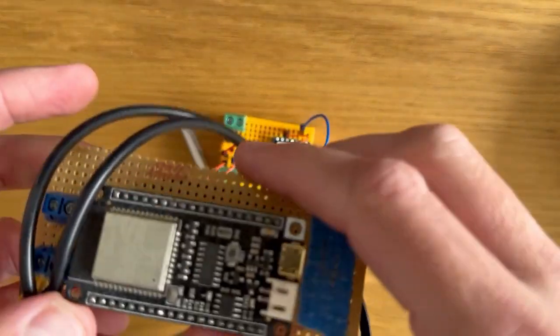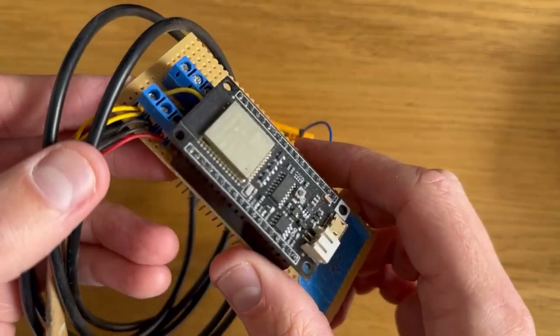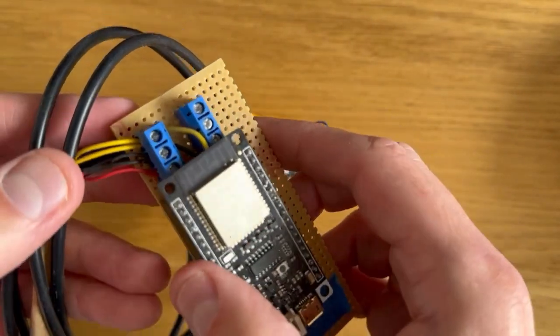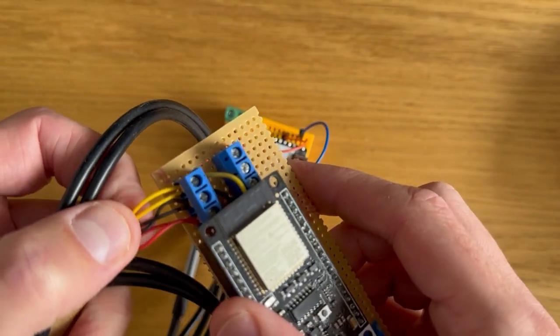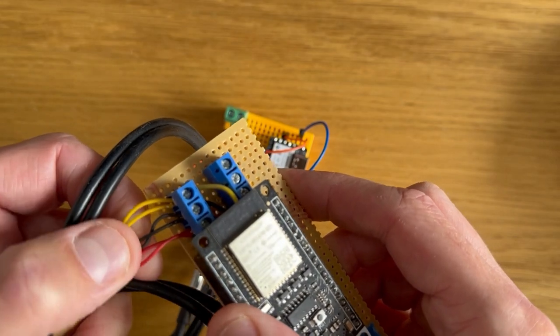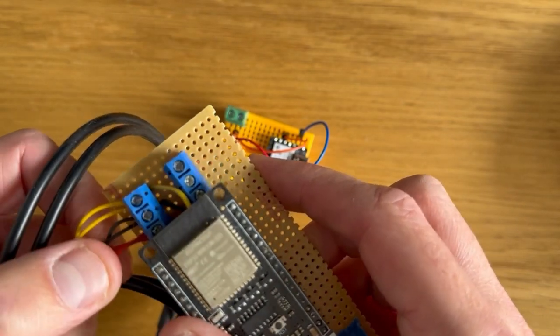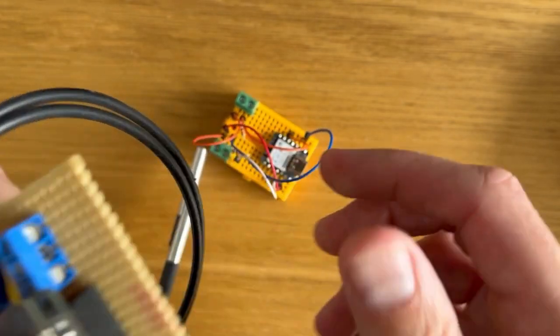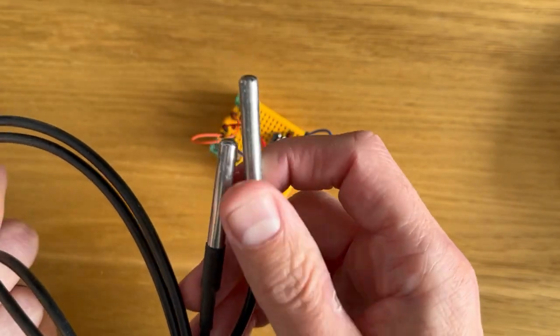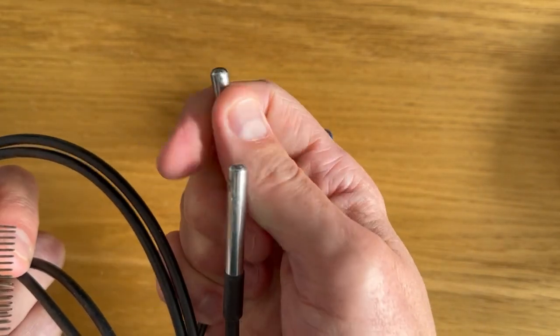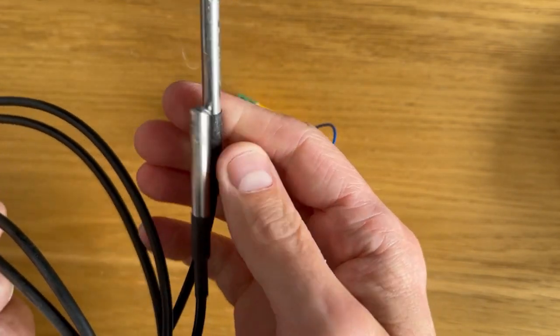I've got like this is another prototype I was working on using a different board and you can see these have got three wires so there's kind of a data wire and then the positive and negative. But I've just found these really difficult to get good readings off when I connect them to a pipe.